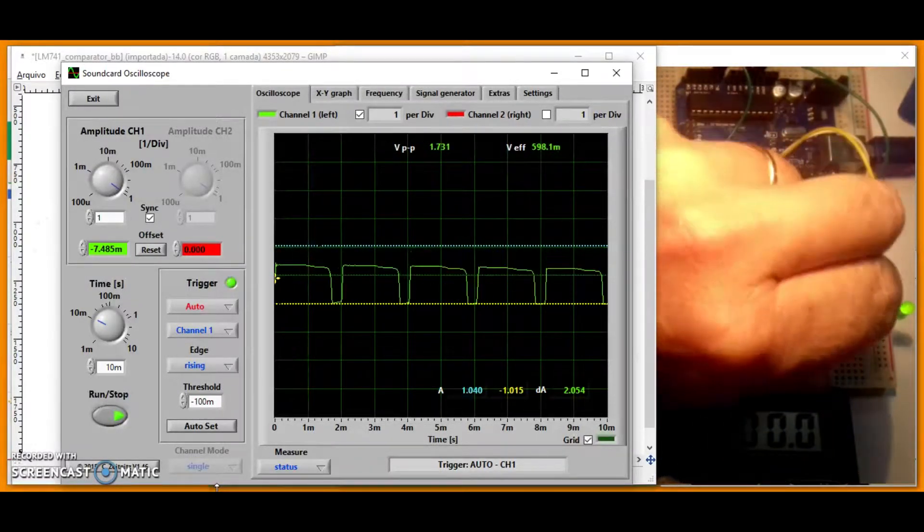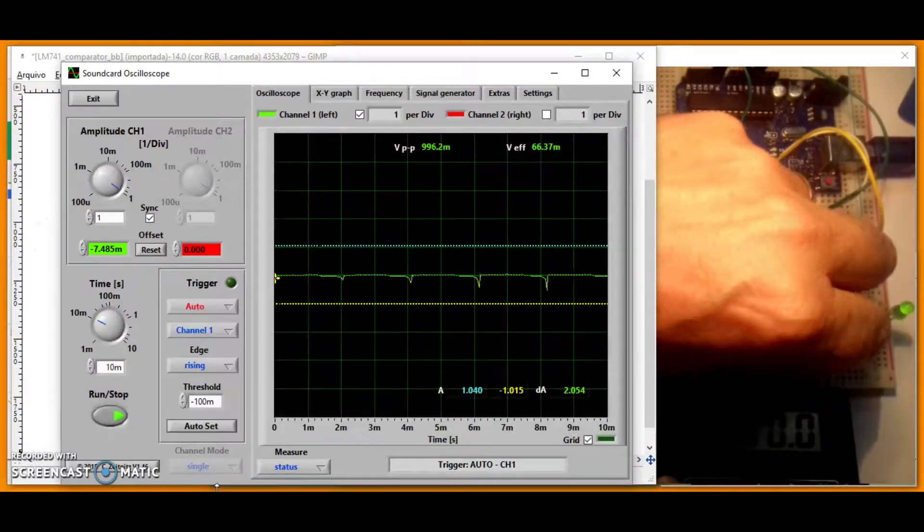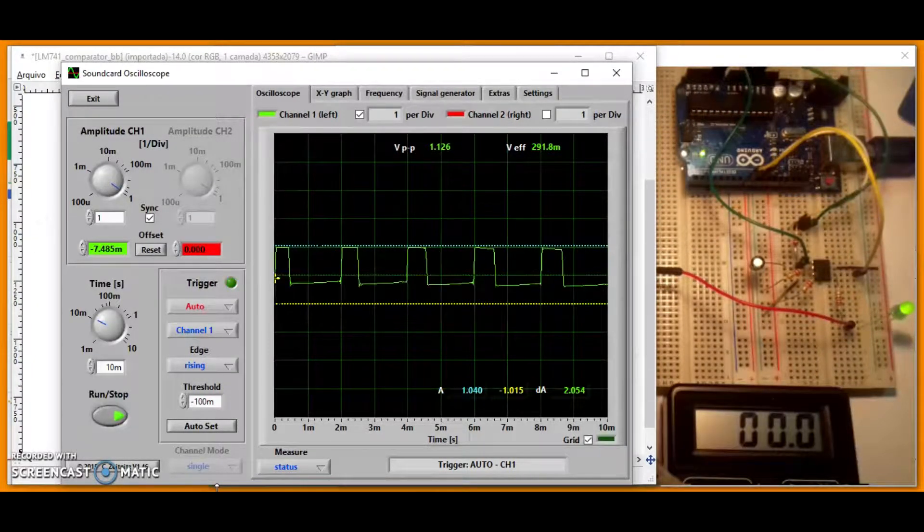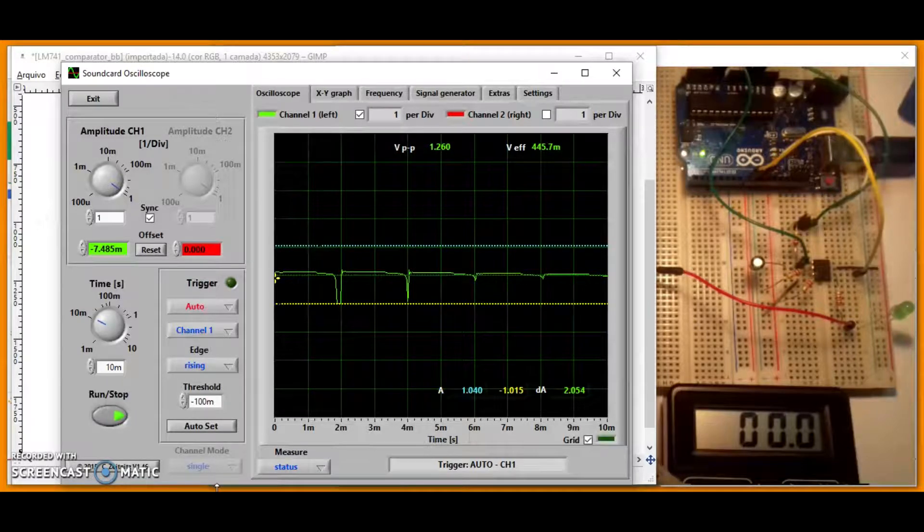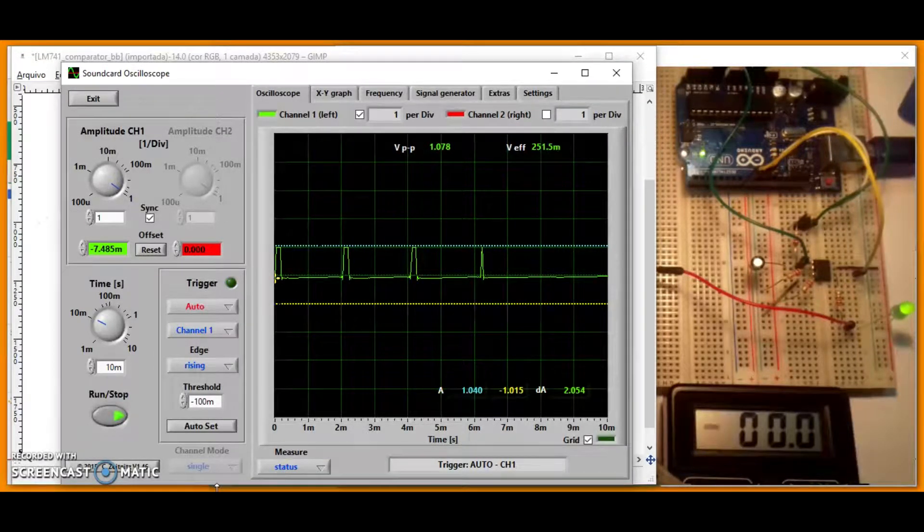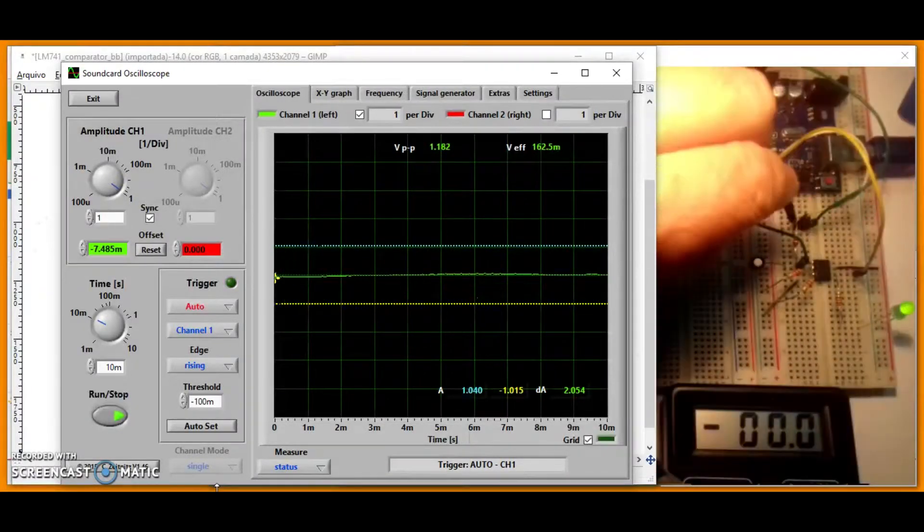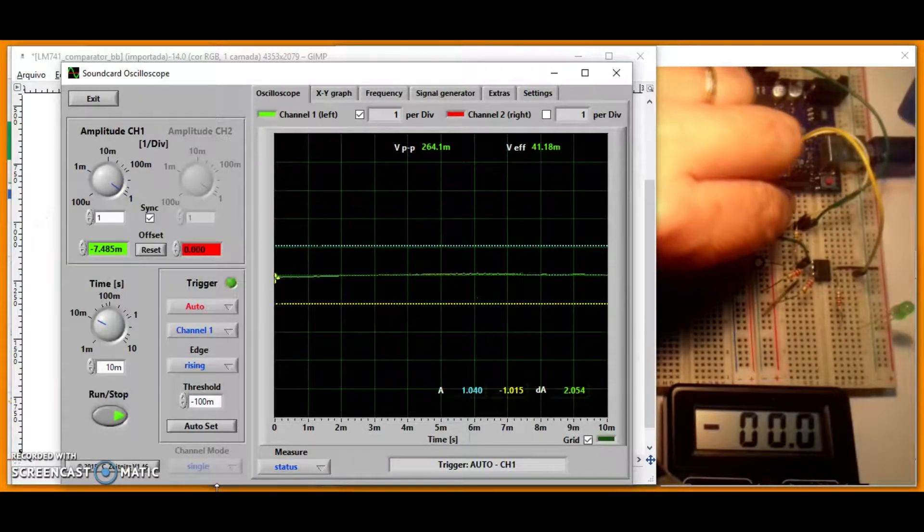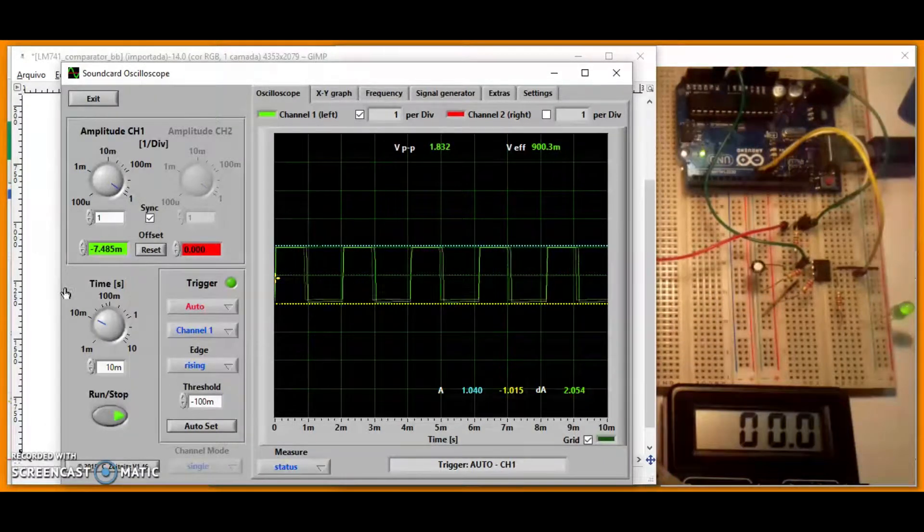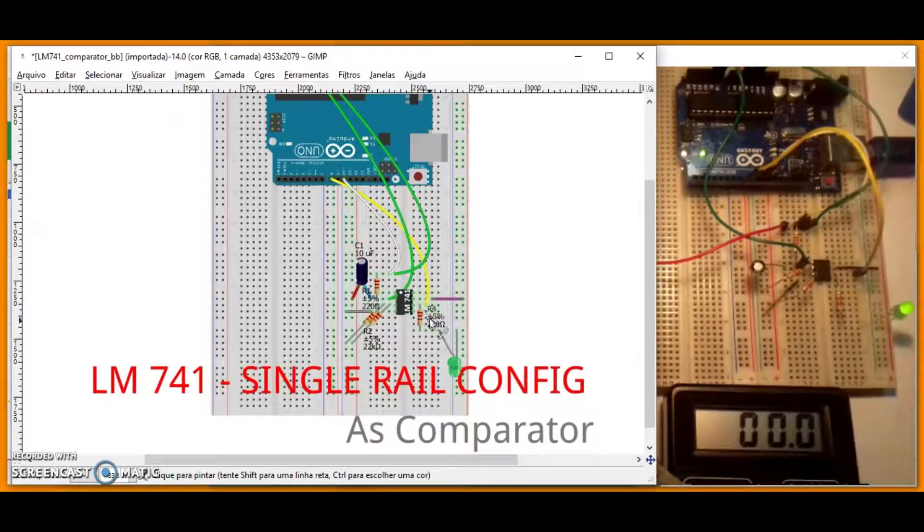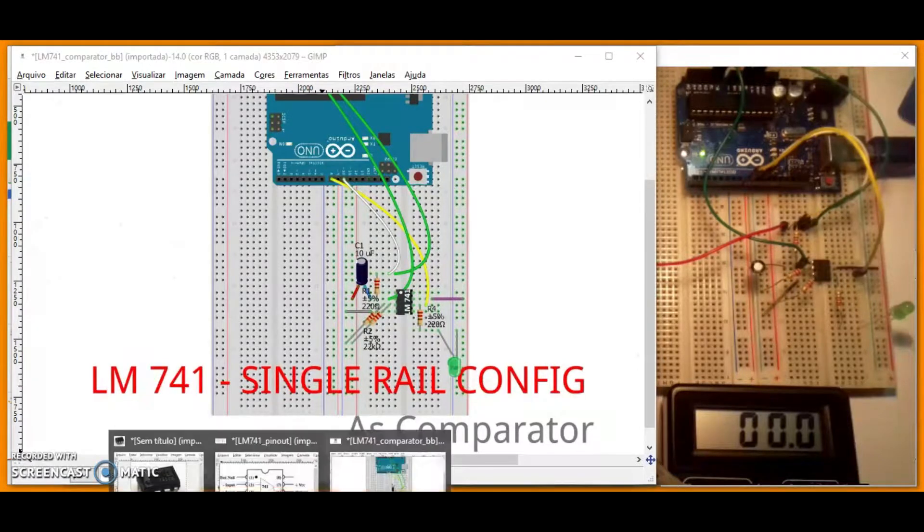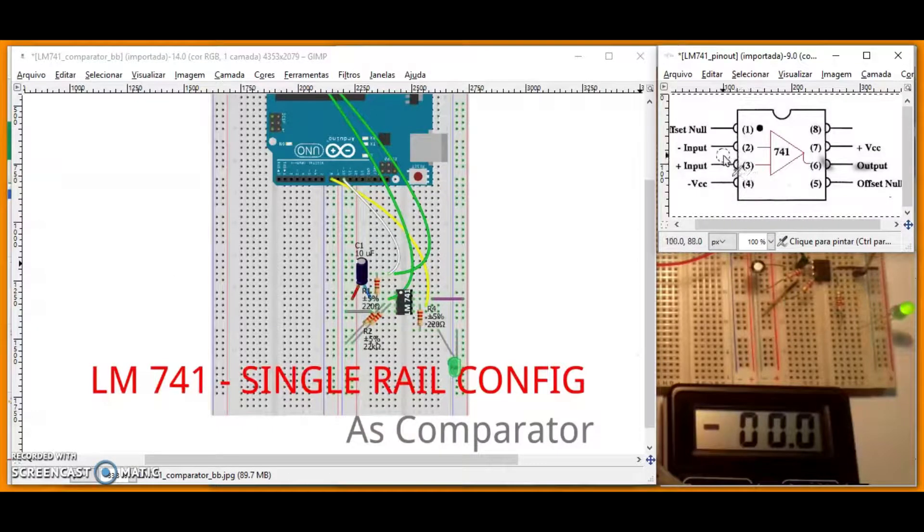For a small difference between the non-inverting and inverting terminal, the amplifier output will be driven near the supply voltage. Without negative feedback, the LM741 can act as a comparator. If the inverting input is held at 0V and the input voltage applied to the non-inverting input is positive, the output will be positive. If the input voltage applied to the non-inverting input is negative, the output will be negative.